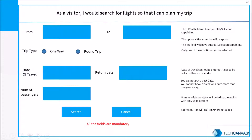For example, the From field will have auto-fill or selection capability, meaning as you type in the name of the city, the system will automatically fill it. This helps the user and the system capture the correct authenticated city names where there are airports. In this front part of the card, we capture all the details relating to the fields on the screen, including business rules. If required, you can also have another version serialized — for example, part two can have an activity diagram or a flowchart.